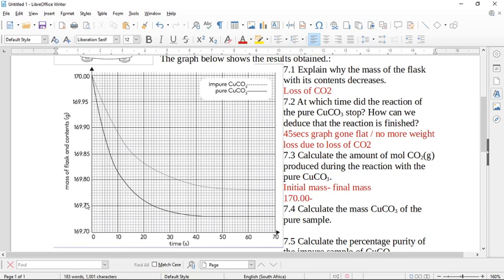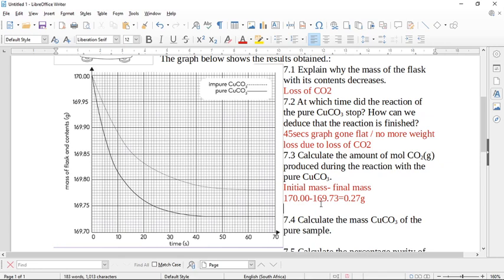And my final mass, we have to read it carefully off the graph. So this is 169.7, this is 169.75. So every one of these blocks is going to be comma 01. So this is going to be 169.73. So let's work that out on our calculator. And as always, please check me up.